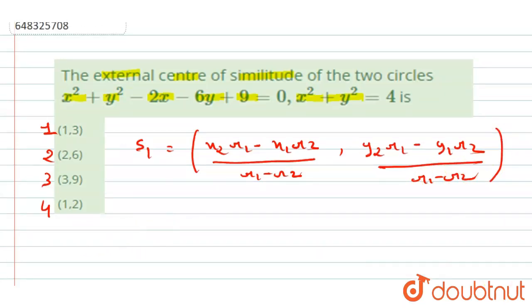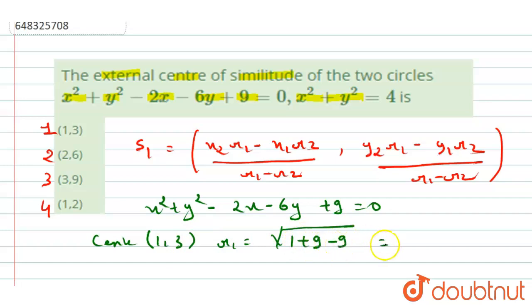The first equation given to us is x² + y² - 2x - 6y + 9 = 0. So the center will be (1,3), and r₁ equals √(1 + 9 - 9), which gives us √1 = 1.